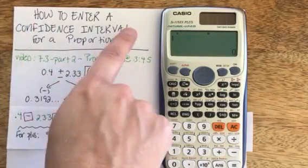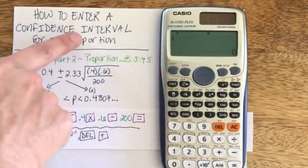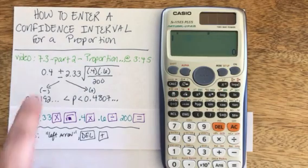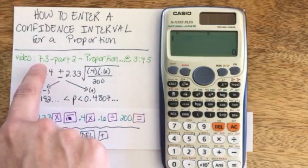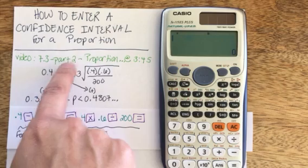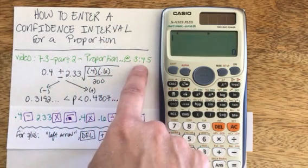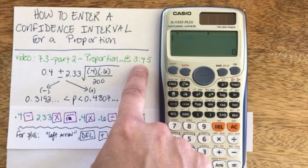Here's how to enter a confidence interval for a proportion or perhaps you just call it a portion or percent. I'm taking a problem off of my video titled 7.3 Part 2 proportions and this exact problem can be found at timestamp 3 minutes and 45 seconds.